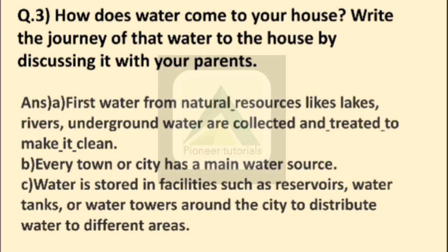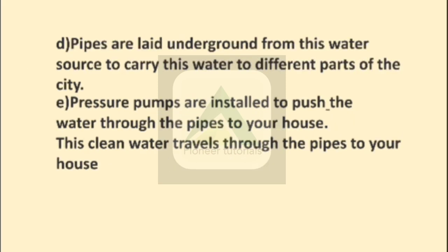First, water comes from natural resources. Every town or city has a main water source. When we use water systems, they clean the water and store it in big tanks, cement reservoirs, or towers. Then pipes are laid underground from these water sources to carry water to different parts of the city, distributing it to different areas.